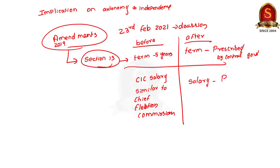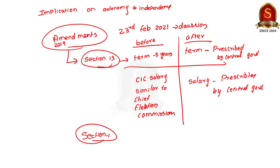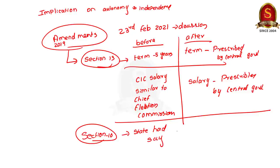The second change is that the 2019 amendment amended Section 16, which deals with the State Information Commission. Before the amendment, the State Government had some say in case of the State Information Commission. Now the Central Government has full control over the State Information Commission. The proposed amendment allows the Central Government to control through rules the terms and conditions of the appointment of the Commissioners of the State Information Commission. These are the two main amendments made by the 2019 amendment.